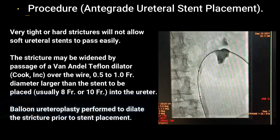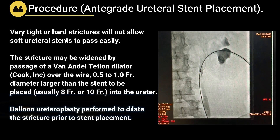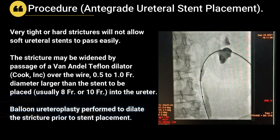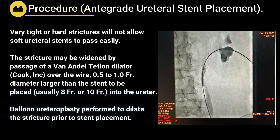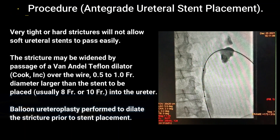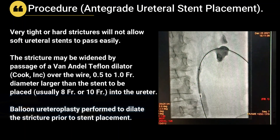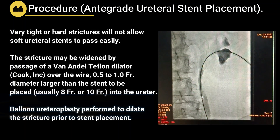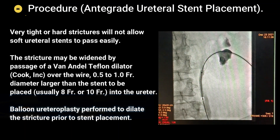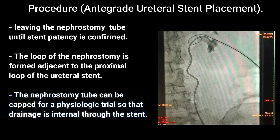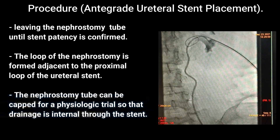If very tight or hard strictures will not allow soft ureteral stents to pass easily, the stricture may be widened by passage of a Van Andel Teflon dilator over the wire — diameter larger than the stent to be placed, usually 8 French or 10 French — into the ureter. Otherwise, balloon ureteroplasty is performed to dilate the stricture prior to stent placement, leaving the nephrostomy tube until stent patency is confirmed.